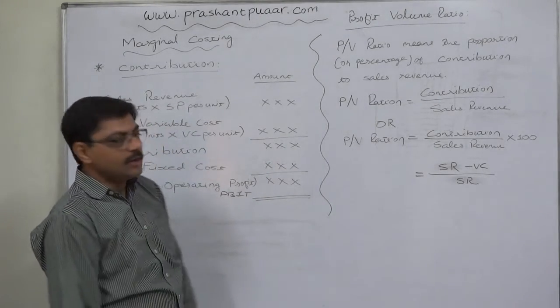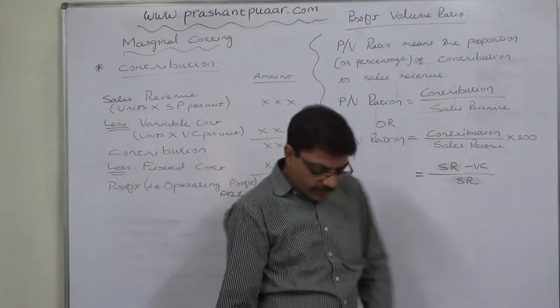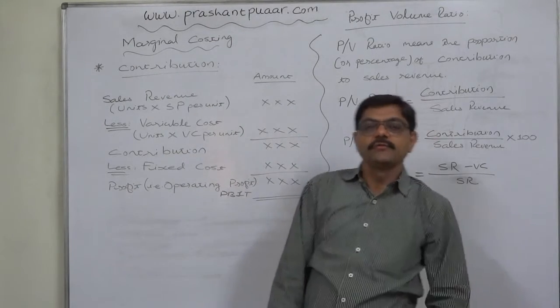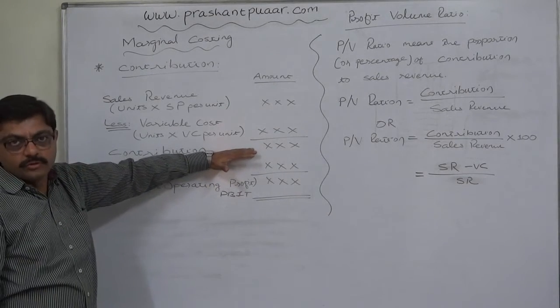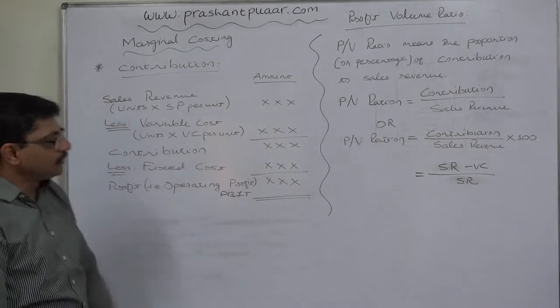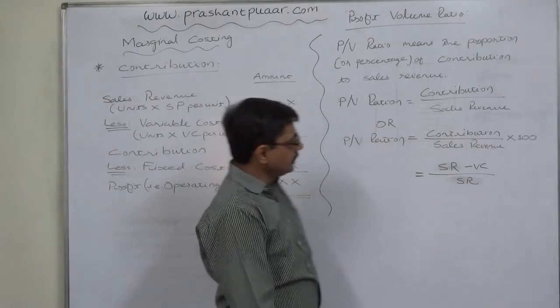What is PV ratio? Profit volume ratio is the proportion or percentage of contribution to sales. As we know that contribution is a very important concept, excess of sales revenue over the variable cost is contribution.